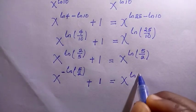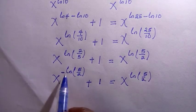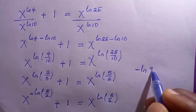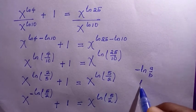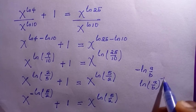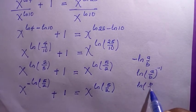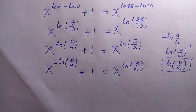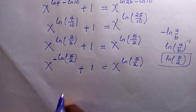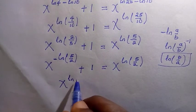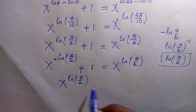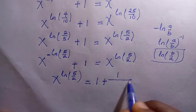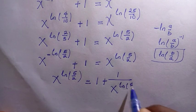What I did here — suppose we have negative ln of a divided by b. This negative is just like negative 1, and if you take it to the power, we get x to the power of minus 1, which is the inverse, becoming b divided by a. So rearranging, x raised to the power of ln(5/2) equals 1 plus 1 divided by x raised to the power of ln(5/2).